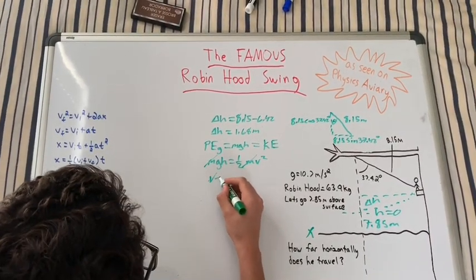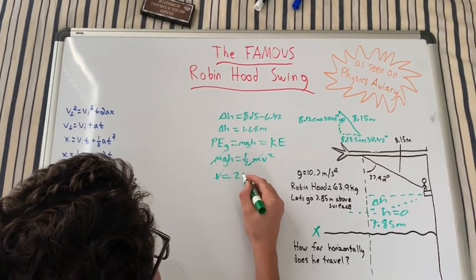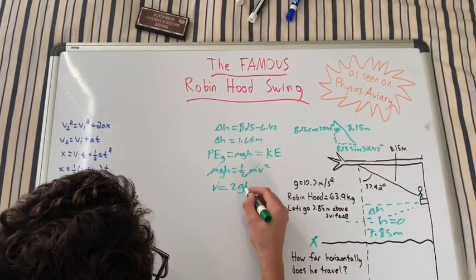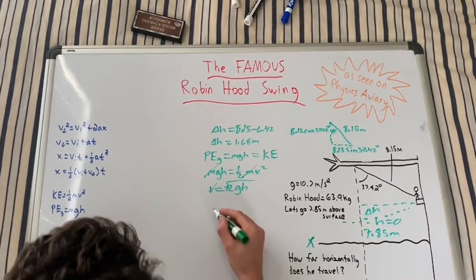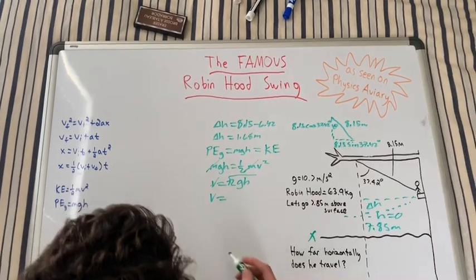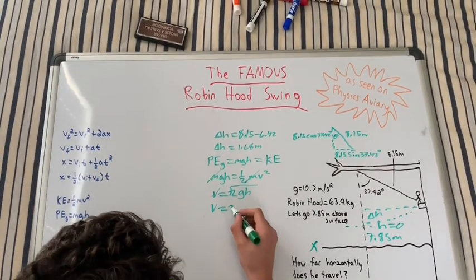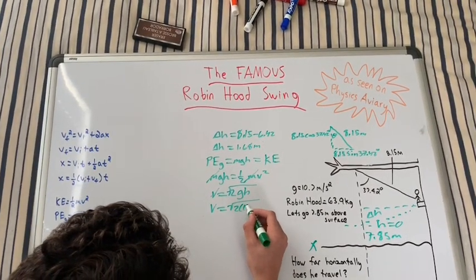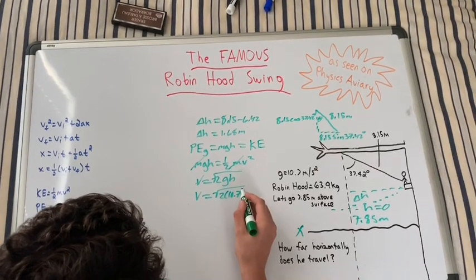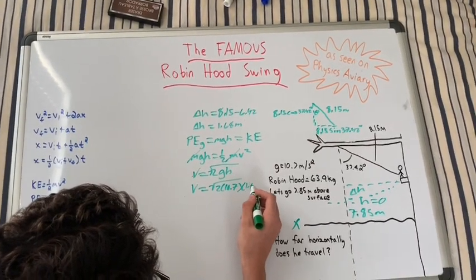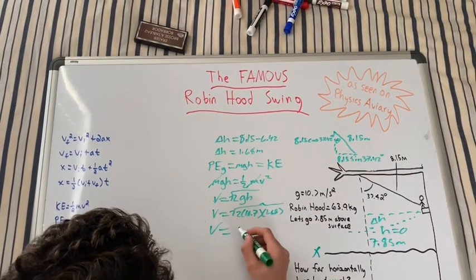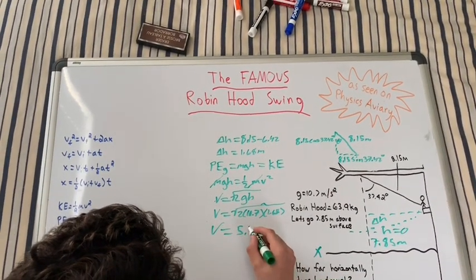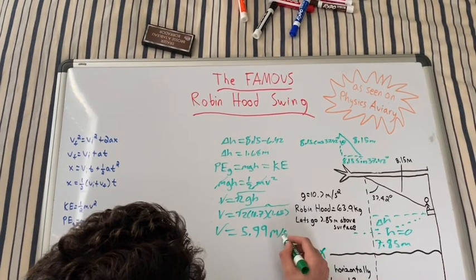And then we're going to get v equals the square root of 2gh. So v when we plug in our quantities is going to equal the square root of 2 times 10.7 times 1.68, and that comes out to 5.99 meters per second.